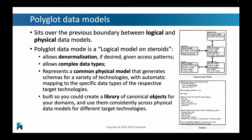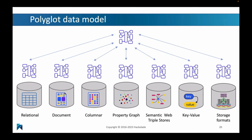It allows for complex data types, things like nested structures, for example. In effect, it will represent a common physical model that will allow you to generate schemas — technical artifacts for a variety of different technologies — with automated mapping between all the different data types of the respective target technologies. It also has a lot of functionality that allows you to reuse and leverage a library of canonical objects for your domains, so that you can use them consistently across all of your physical data models.